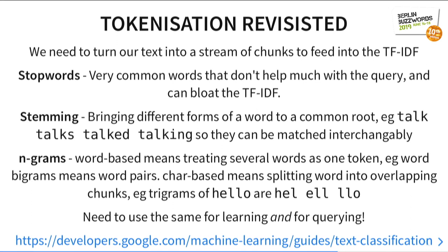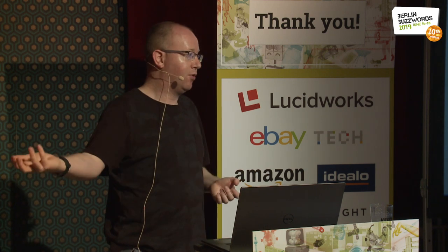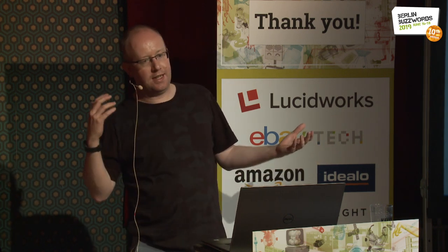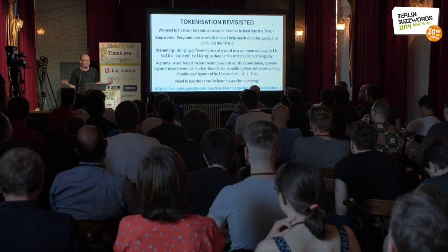A little bit more on tokenization. Stop words — if you've come from a Lucene/Elastic background you know all about this. Very common words like 'the', 'a', 'they' — we want to throw them away because it shrinks the size of our TF-IDF matrix. The smaller the matrix, the less memory we need and the faster our calculations run. But be aware that you need to have the right stop words, firstly for your language and secondly for the domain of your text. It's no good taking one trained on Wikipedia movie titles and feeding it into data about clinical trial processing.